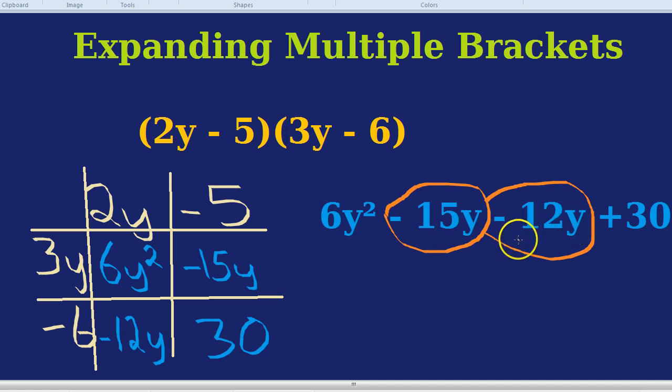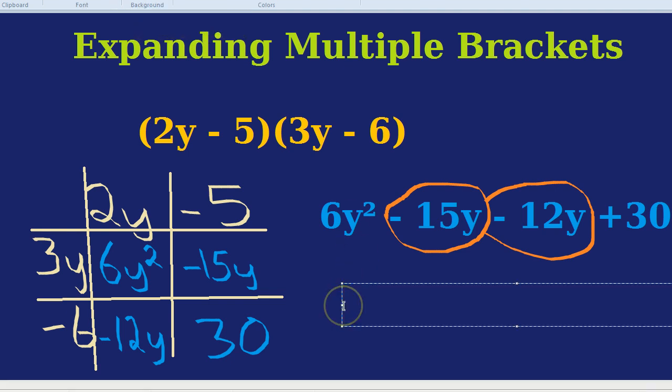This time, we're 15 in debt, because of the negative, and then we get 12 even more in debt. That minus 12 doesn't help us out, it doesn't pay down our debt, it just makes our debt even bigger, it's another minus 12 of debt. So minus 15, minus 12, you end up with minus both of them, so minus 27. So our final answer would be 6y squared, take away 27y, plus 30.